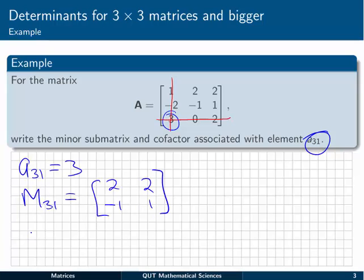And finally, the cofactor associated with A31, C31, is equal to negative 1 to the power of the sum of the row and column number, 3 plus 1, times the determinant of M31. And we can write that that's minus 1 to the 4, which is just 1. And the determinant of M31 we do with the crisscross method, 2 by 1 is 2, take away minus 2, so that's plus another 2 is going to be equal to 4. 1 by 4 is just 4.